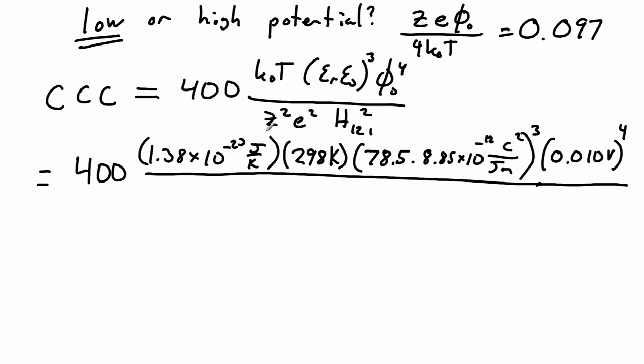Then we have the charge on our salt. Remember we derived this only for symmetric electrolytes, so the cation and anion both have the same charge. In this case it's a charge of 1. We have the charge on the electron, 1.6 times 10 to the negative 19 coulombs. And we've got the Hamacher constant as well. We need to square that. That is 5 times 10 to the negative 20 joules.